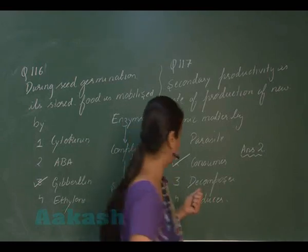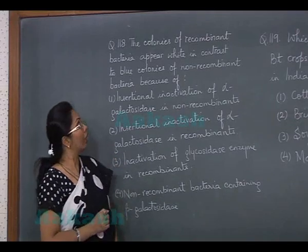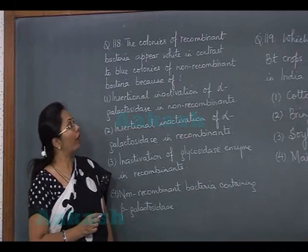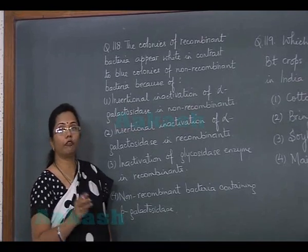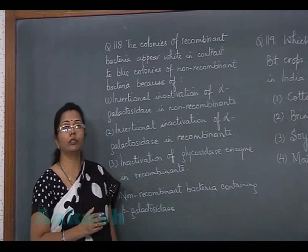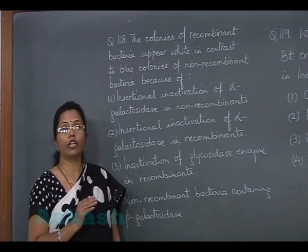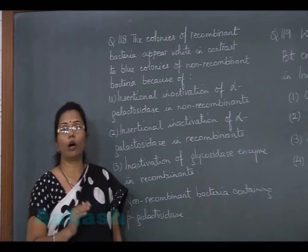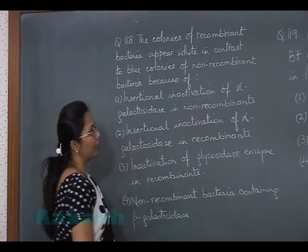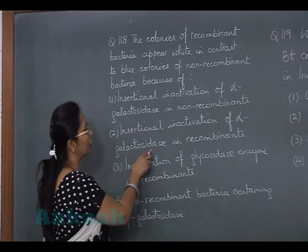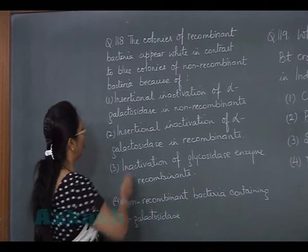Now question number 118: the colonies of recombinant bacteria appear white in contrast to blue colonies of non-recombinant because — if the gene of interest has been inserted into the galactosidase gene, that gene becomes insertionally inactive. If that gene is inactive, it will not convert galactose into a blue colored compound. So the answer is insertional inactivation of alpha-galactosidase in the recombinant, and the X-gal derivative remains white.